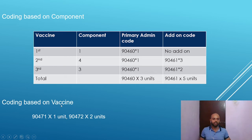Based on the vaccine, there are totally three vaccines given. So I'm billing 90471 for 1 unit, and the remaining two units I'm billing with 90472.